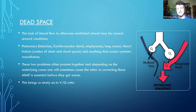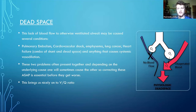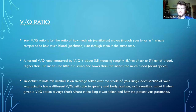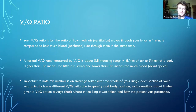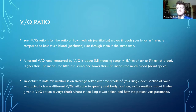We use something called a VQ ratio to tell how well your lungs are working at getting oxygen in. Problems with it are called VQ mismatch. They're measured using VQ scans or by measuring alveolar oxygen concentration compared to PO2. Normal VQ ratios are 0.8. You work it out by dividing the amount of air that goes in and out of the lung by the amount of blood that goes in and out of the lung in a minute.